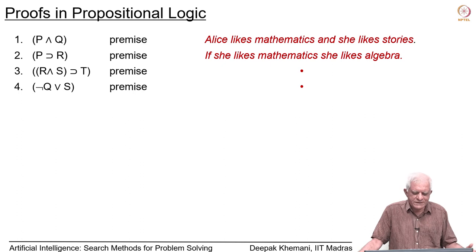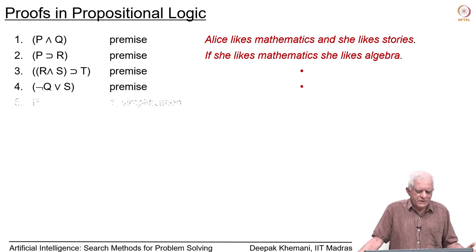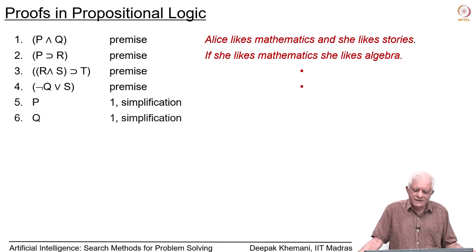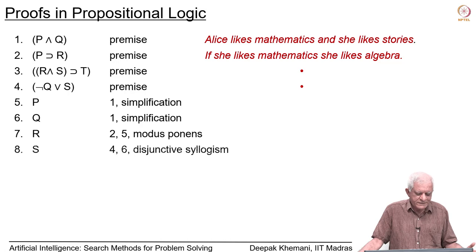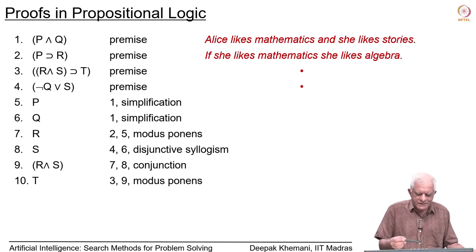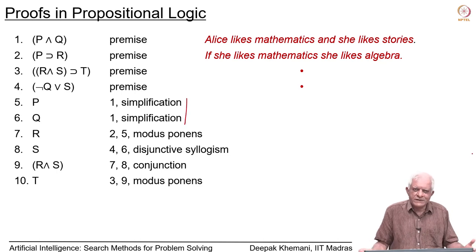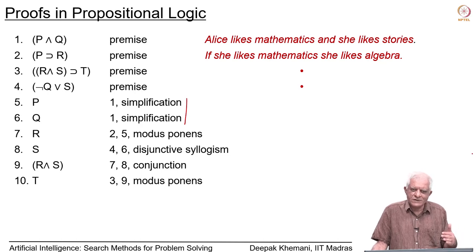The process of making inference is to choose one of the rules of inference that we briefly discussed — you probably already know them — to keep adding new statements. We can add P and Q and R and S in this order, then R and S, and then T. It is not a very long proof. Why can we add P and Q? We are given that P and Q is true, and therefore P is true. There is a rule called simplification.